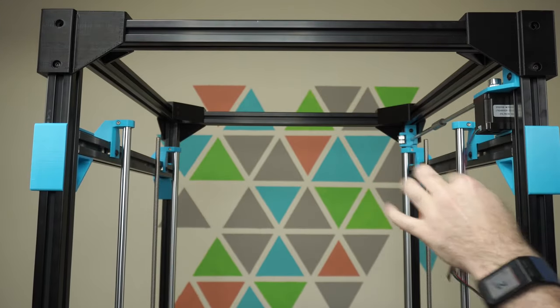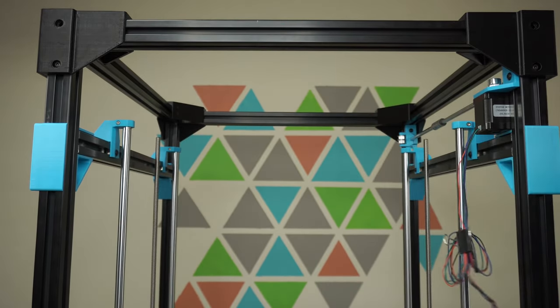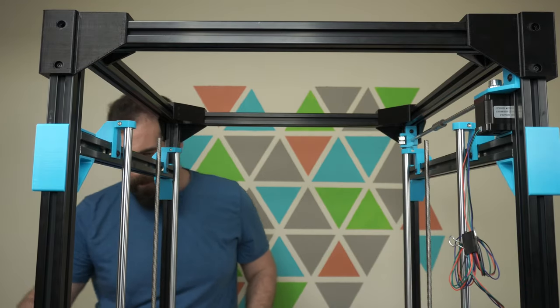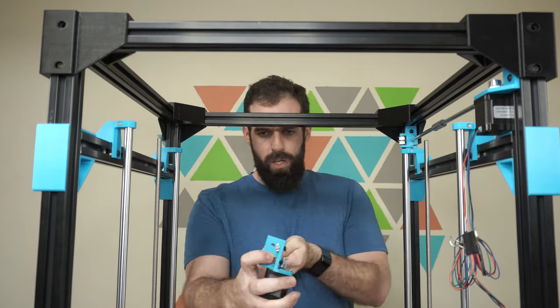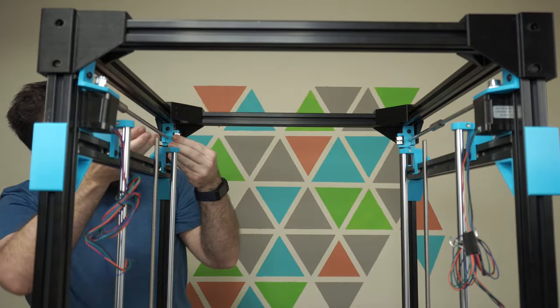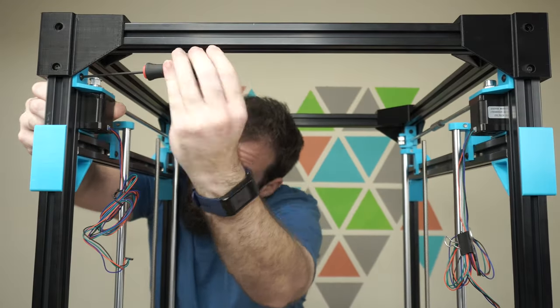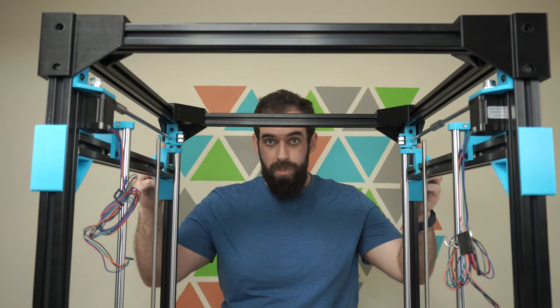Okay, that's one side. You want to make sure that the wires are sticking out towards the inside of your frame. Now we'll do the right side. Then we'll go around and tighten up the clamps on the rods.